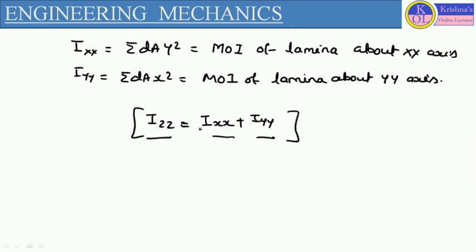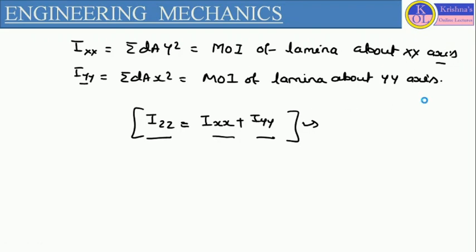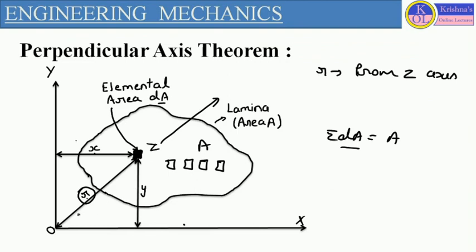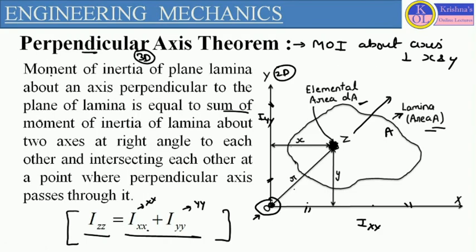This equation represents the perpendicular axis theorem, where Ixx is the moment of inertia of the lamina about the xx axis, and Iyy is the moment of inertia of the lamina about the yy axis. It is called the perpendicular axis theorem because we define the moment of inertia about one axis which is perpendicular to the plane lamina, perpendicular to both the xx and yy axes, and passing through the same origin point. When this kind of condition exists, we apply the perpendicular axis theorem.